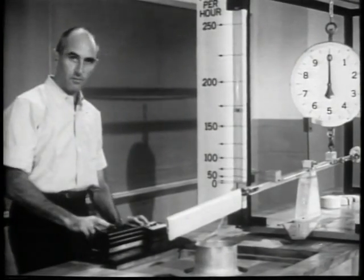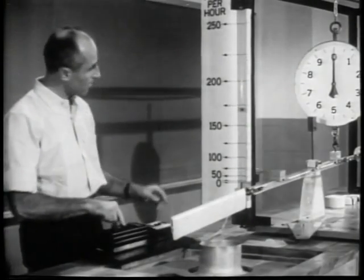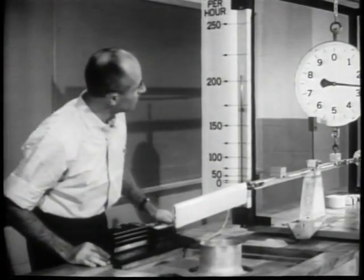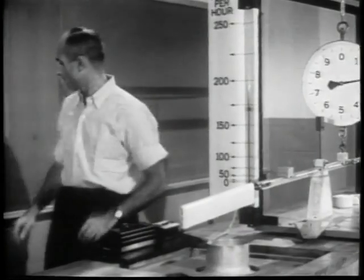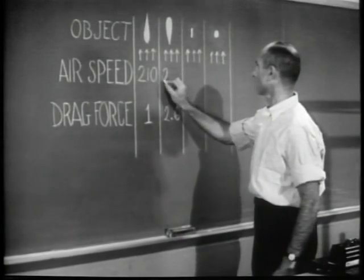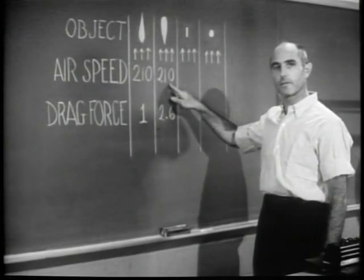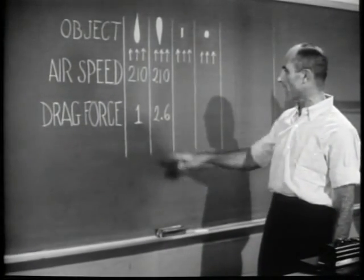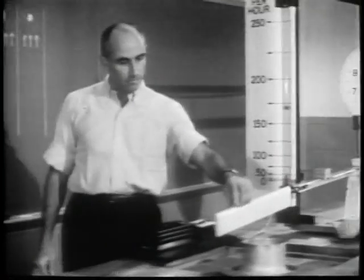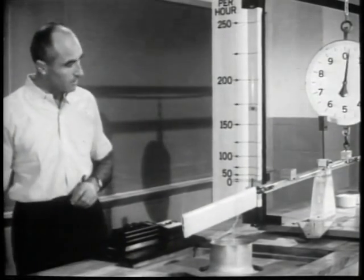I haven't changed the controls so that when we start the blower, we should expect the same speed as before. We did reach the same speed of 210 miles per hour, and we saw that the scale read 2.6. The drag of the airfoil the wrong way around is therefore about two and a half times greater than the drag when it is the right way around.